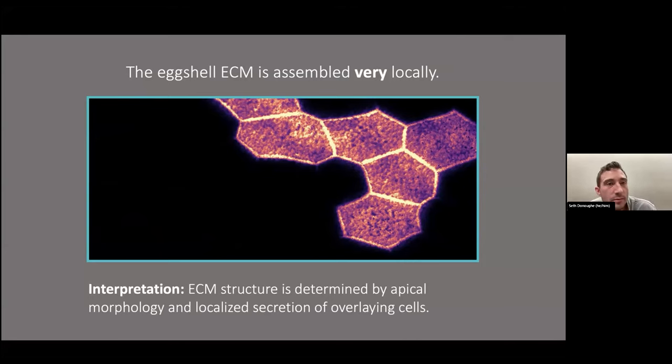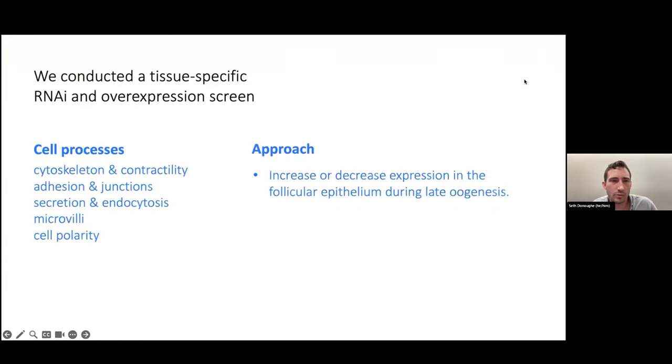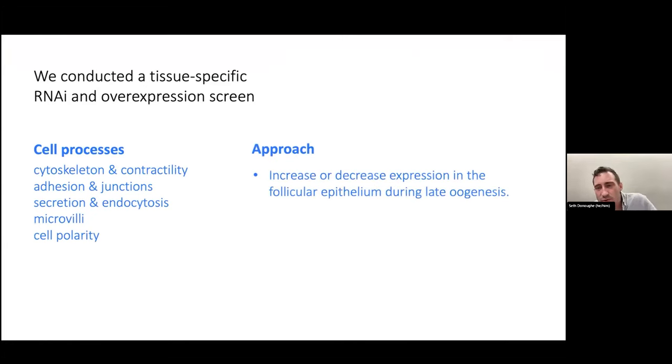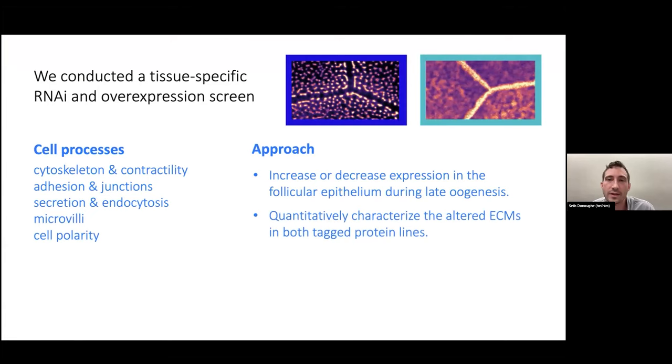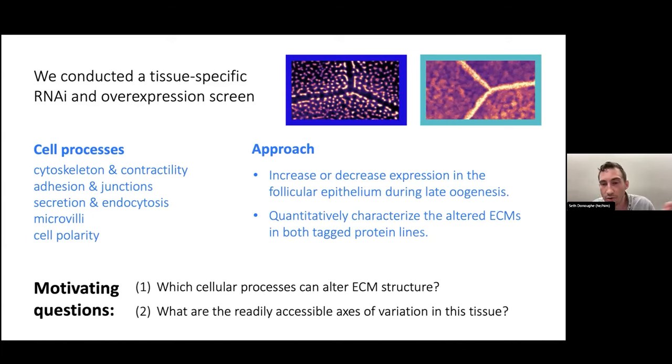Then we want to ask, what are those cells doing? To do that in Drosophila, I used a tissue-specific RNAi and overexpression screen. I identified candidate cell processes that might have any plausible effect on this ECM structure, found genes that are essential for those processes, and then you can increase or decrease their expression just in this tissue, just during the time of eggshell formation. When you do that, we can use these two transgenic lines to quantify lots of traits very precisely. These labeled lines allow us to assess subcellular scale traits for this ECM. With this screen, we can ask certain questions: Which cellular processes can alter ECM structure? What are the readily accessible axes of variation in the tissue?